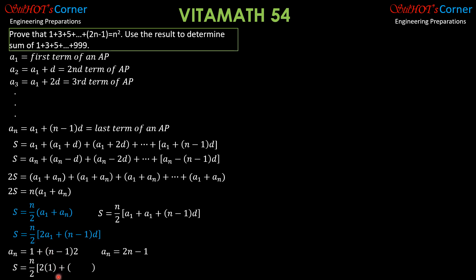So S equals n over 2 times (2 times 1 plus (n minus 1) times 2), which gives n over 2 times (2 plus 2n minus 2), which simplifies to n over 2 times 2n. Therefore S equals n squared. We have just proven that 1 plus 3 plus 5 plus dot dot dot plus (2n minus 1) is indeed n squared.